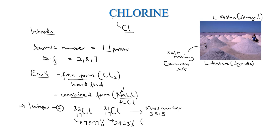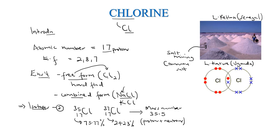Mass number means the total number of protons plus the number of neutrons in the nucleus of a chlorine atom. So we have isotopes of chlorine depending on how many neutrons they have — we basically have two of them. In its free form, chlorine occurs as a gas. It occurs as a diatomic gas, and in terms of bonding, these two chlorine atoms usually bond through covalent bonding — the sharing of electrons.